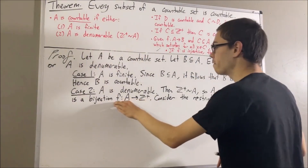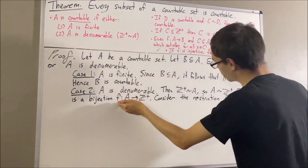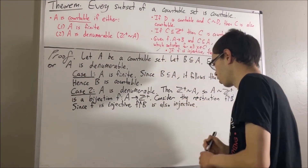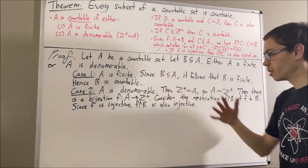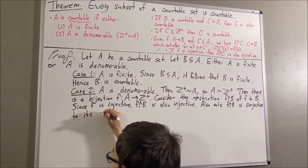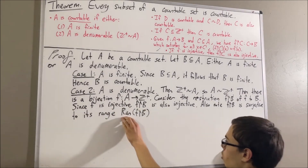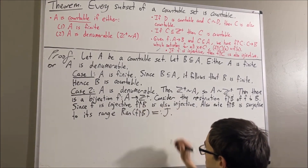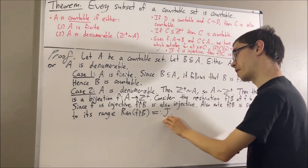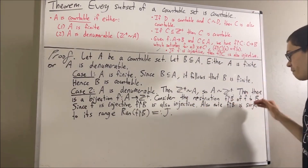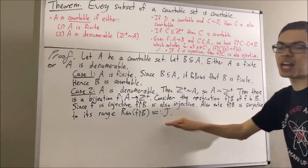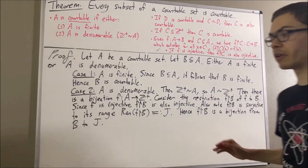Since F is a bijection, F is of course injective. Therefore, the restriction of F to B is also injective. Now, every function is injective to its range, so the restriction of F to B is injective to its range. I'll call the range of the restriction of F to B as J. If we think of the restriction of F to B as a function from B to J, then it is a bijection from B to J, since it is both injective and surjective onto J. So there exists a bijection from B to J.